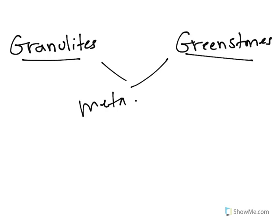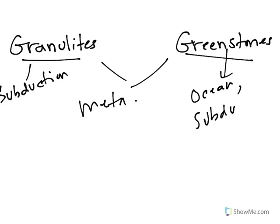Granulites are rocks that form in subduction zones. Greenstones are rocks that form on the ocean floor. They're pillow basalts that form on the ocean floor and then undergo subduction.